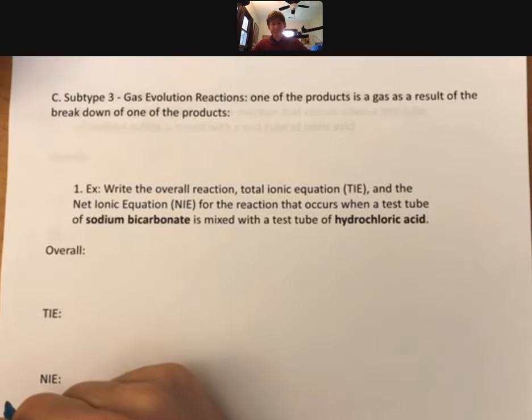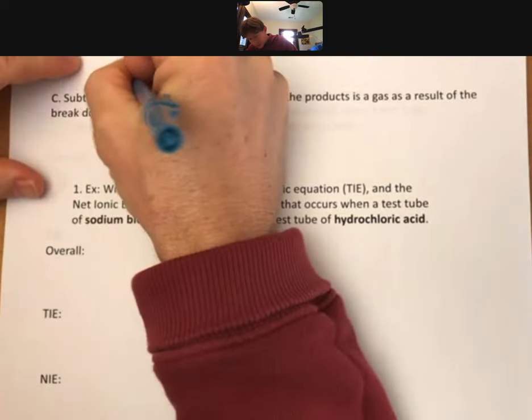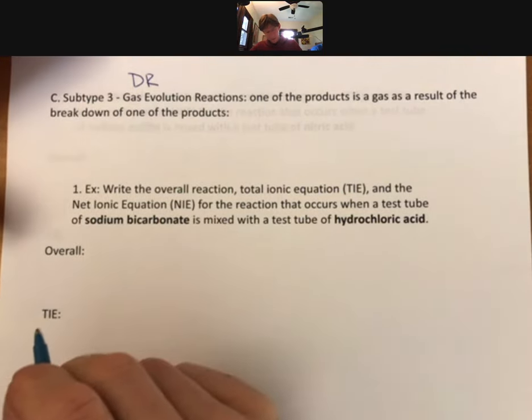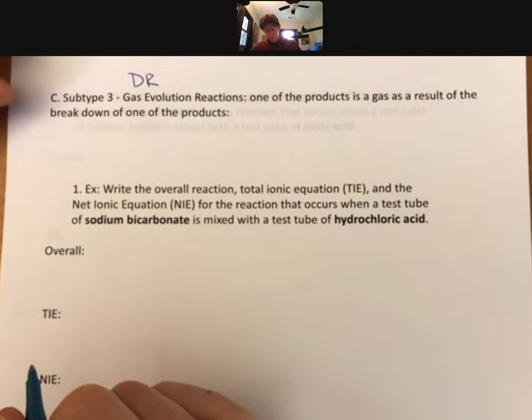Here comes subtype 3. These are double replacements still, and they're gas evolution reactions. We've had precipitates, which were solids. We've had H2O, which is a liquid, and now we're going to have a gas being one of the products.